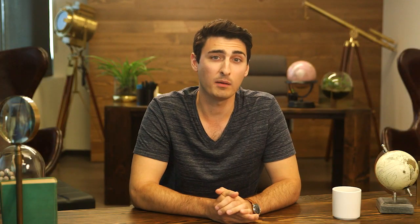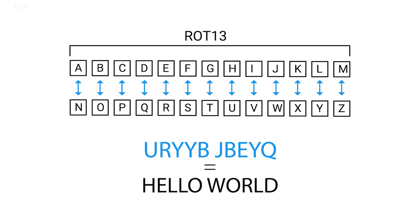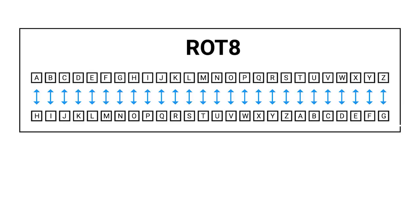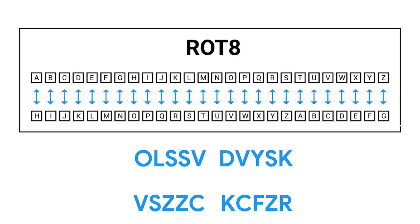Using our ROT13 cipher on 'hello world,' the ciphertext winds up being URYBJBEYQ. To reverse this and go back to the plaintext, we perform the reverse operation by looking up the characters in the output side of the mapping table. Since 13 is exactly half of the alphabet, ROT13 is an inverse of itself — you recover the plaintext by performing ROT13 on the ciphertext again. But if we choose a different key, say 8, the same trick doesn't work to reverse the encryption.